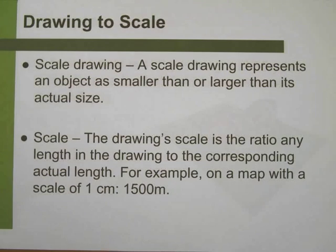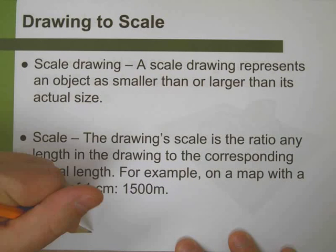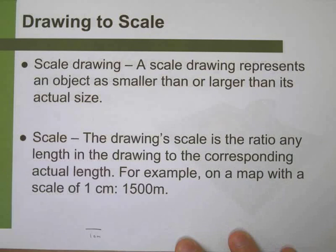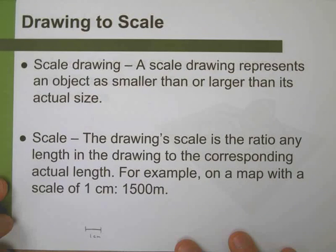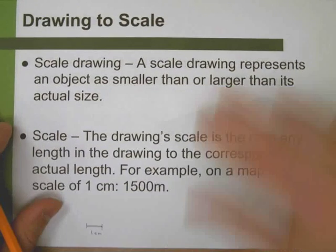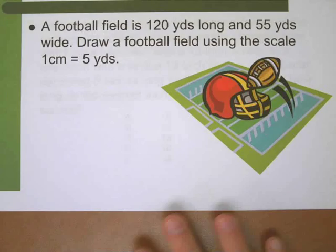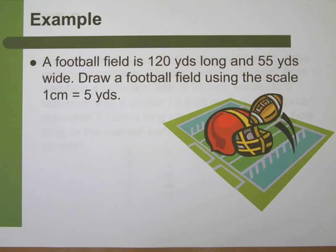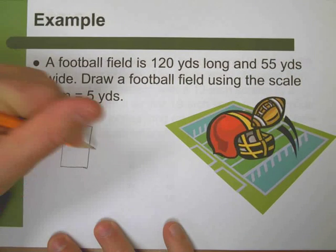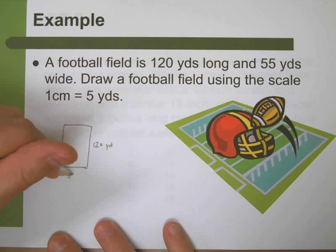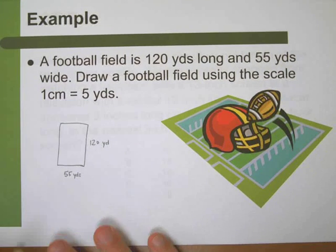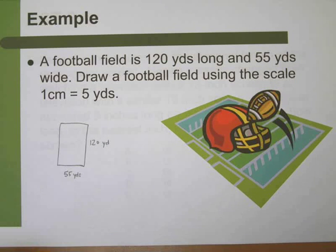We can also draw stuff to scale - it's the same idea: big shapes and little shapes that are all similar. A drawing scale is the ratio of the length in the drawing to the actual length. So if you see a map with a scale of 1 centimeter to 1,500 meters, that means on the map, if you see a 1 centimeter distance measured with a ruler, that actually represents 1,500 meters of real distance. Here's an example: a football field is 120 yards long and 55 yards wide. Let's draw a football field using the scale of 1 centimeter equals 5 yards.